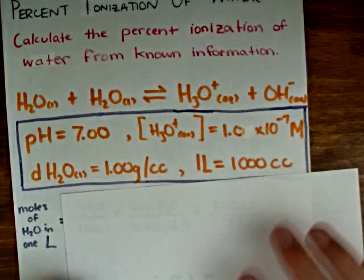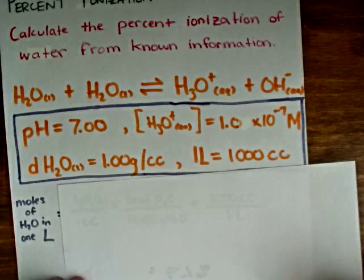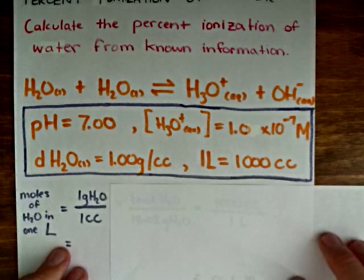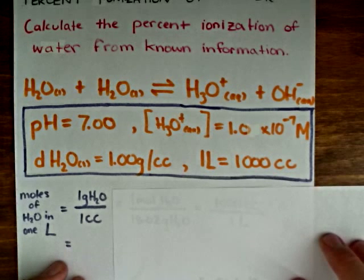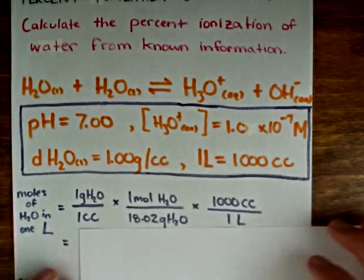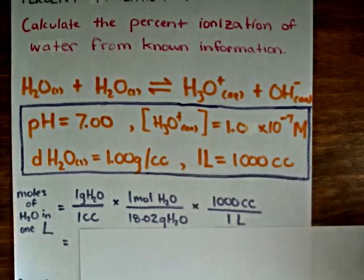The moles of water in 1 liter is equal to—so we have 1 gram of water per 1 cubic centimeter, which is the density of water,